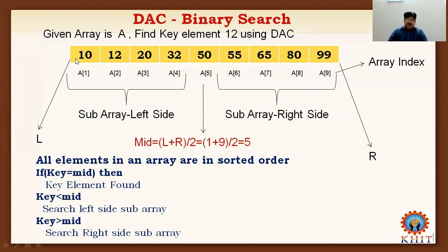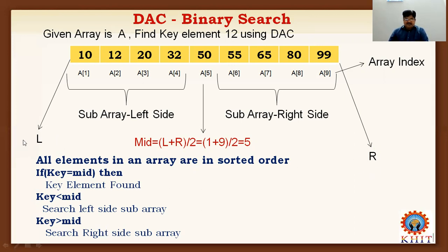We mark the first element in the array as the low index (L), and the last element as R (right) or H (high). This is the left side and the right side, or considered as low and high index. Based on our requirement, we can mark either L/H or L/R.